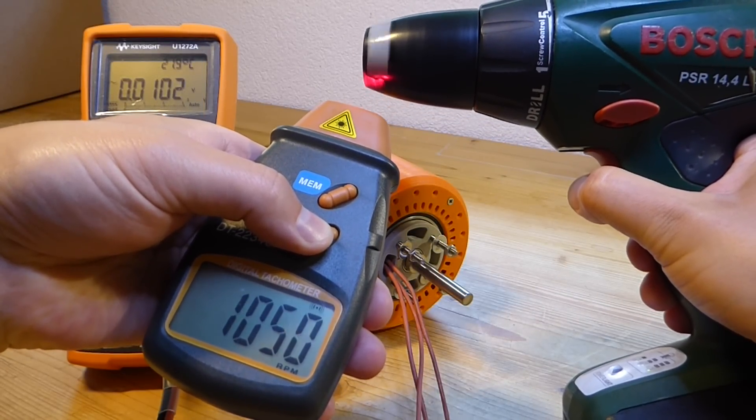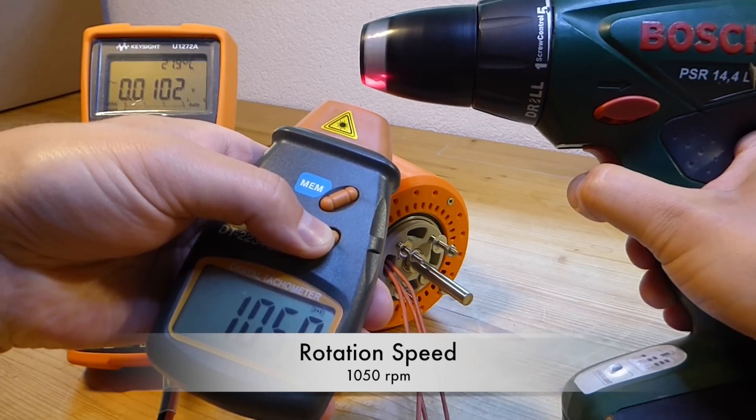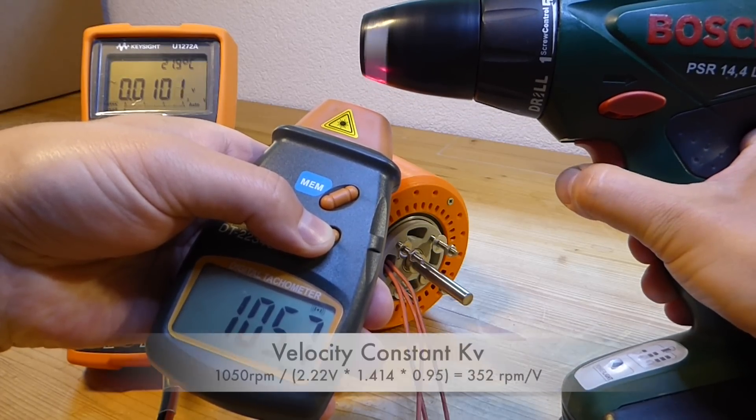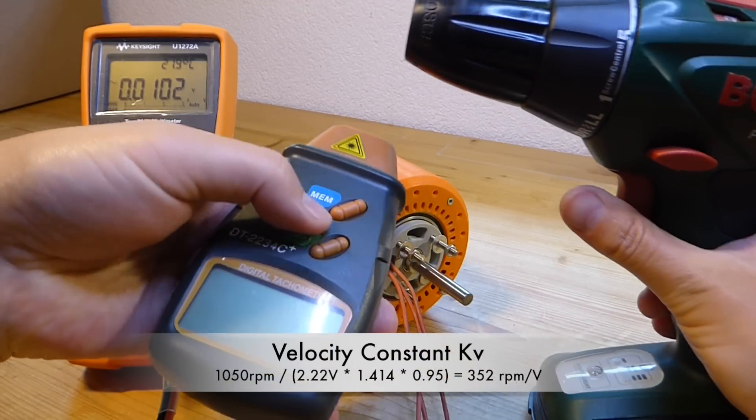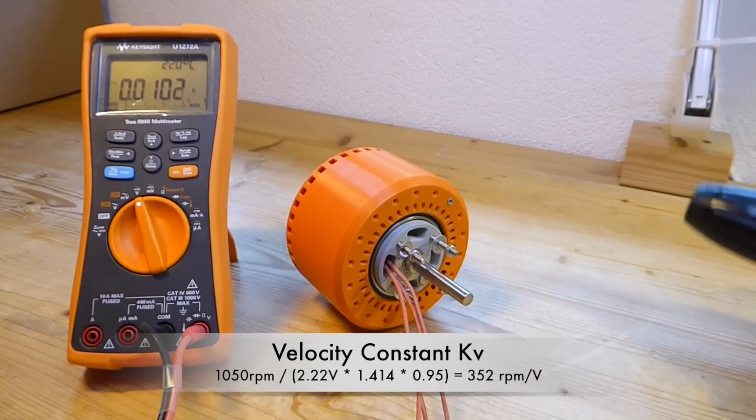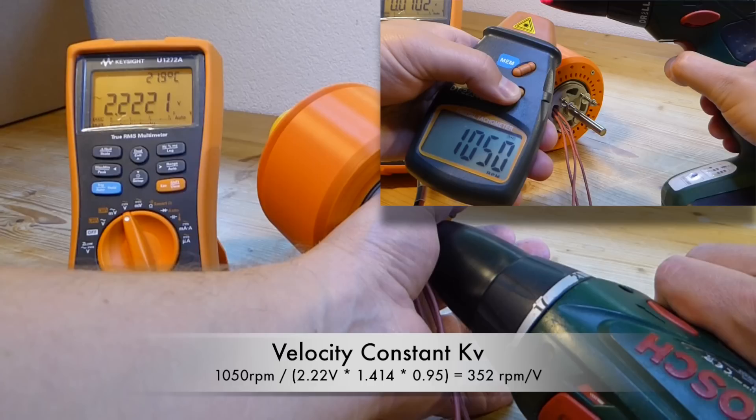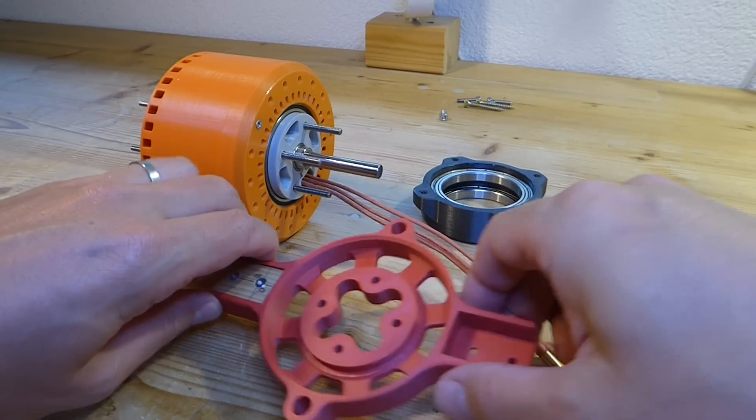Finally a simple formula is needed for KV. In my case it is roughly 350 rotations per minute per volt. The most interesting measurement is certainly the efficiency.